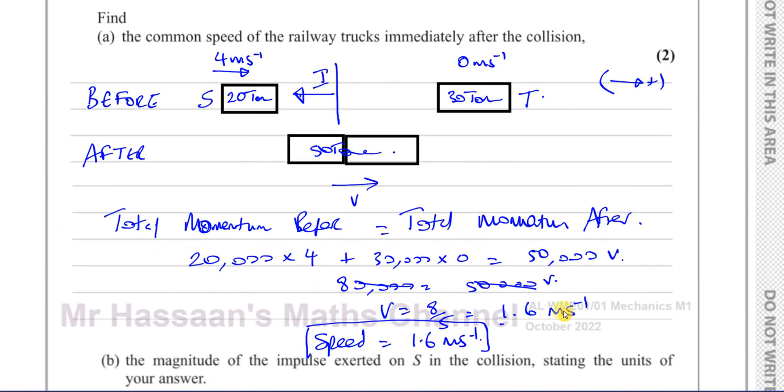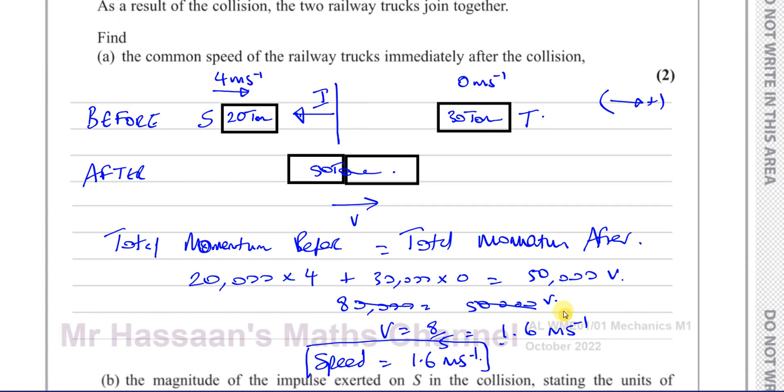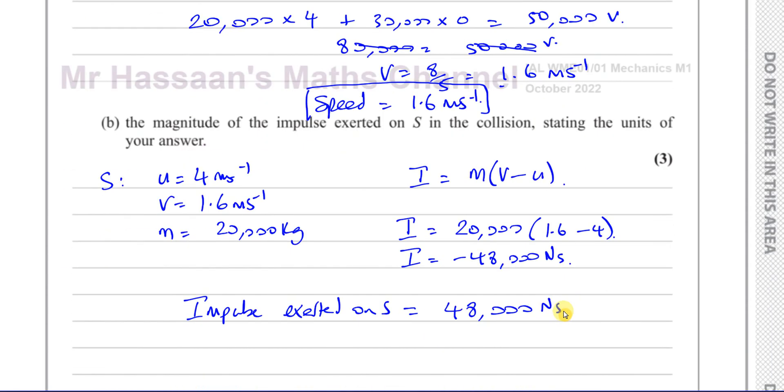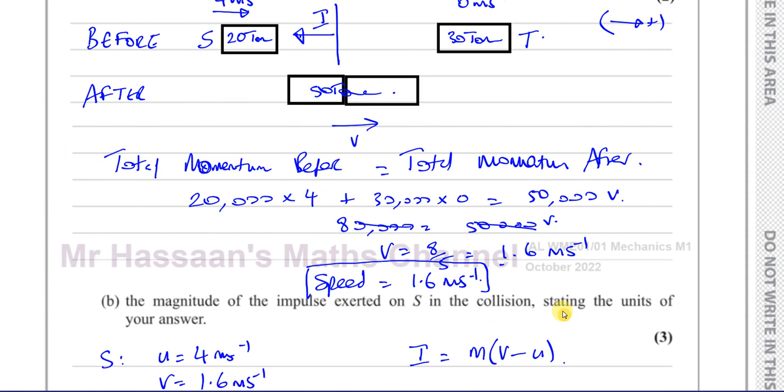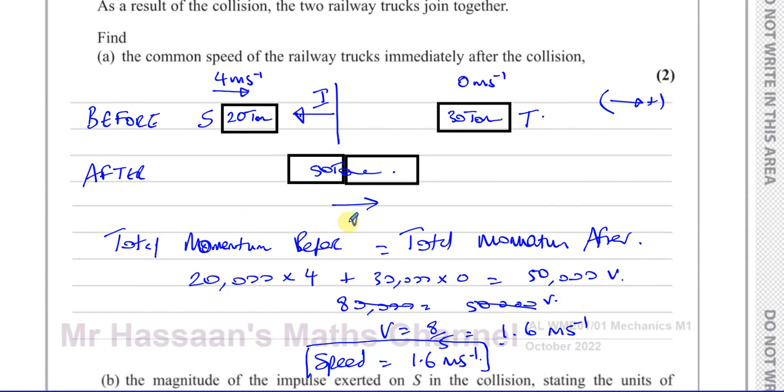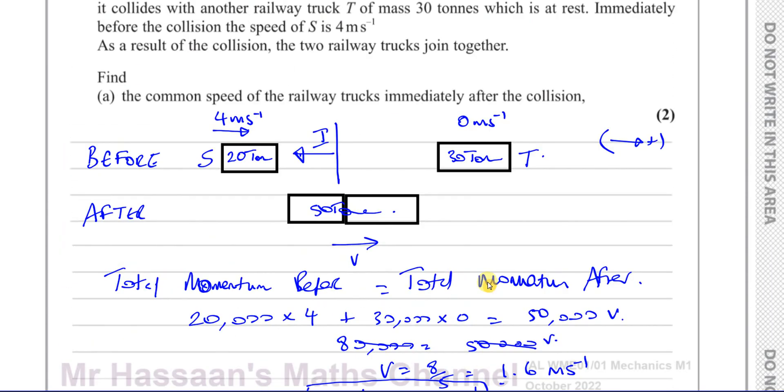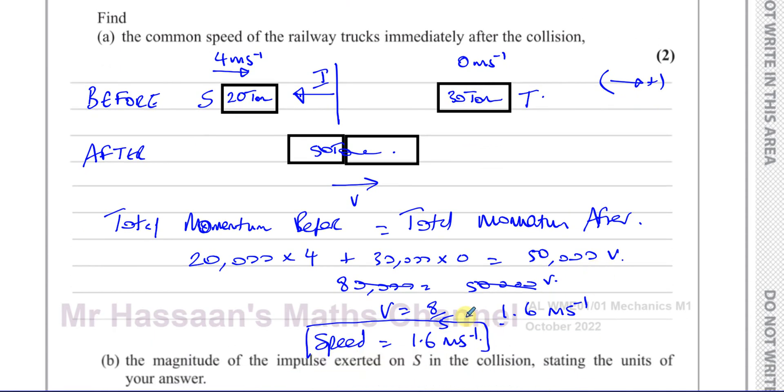That completes the answer for this question. It would have been also possible to find the common speed of the particles after the collision by considering the impulse as well because the impulse exerted on S is equal to the impulse exerted on T. So we could have actually done it that way. We could have found the impulse first and said that if we look at the change of T, you can say the impulse is equal to the mass times its change in velocity.